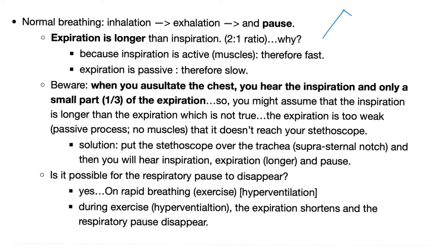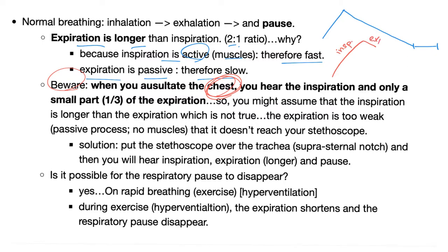Expiration is longer than inspiration in a 2:1 ratio — inspiration is active (muscles, fast), expiration is passive (slow). When auscultating the lung with a stethoscope you may think inspiration is longer because expiration is so weak you only hear the first third of it. Place the stethoscope on the trachea to properly hear that expiration is longer. This apparent longer inspiration on chest auscultation is normal.